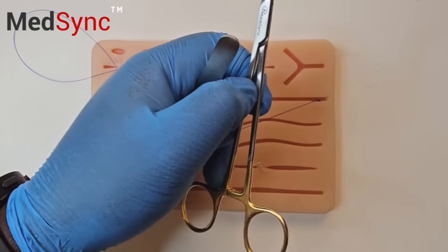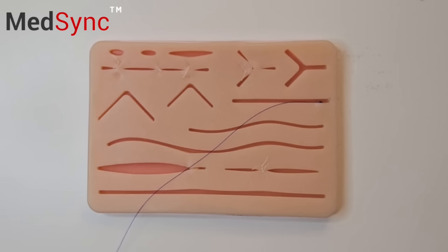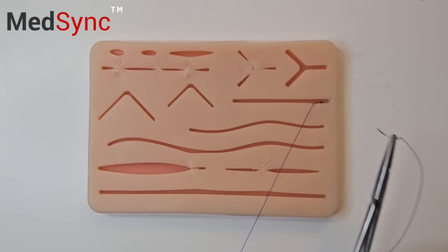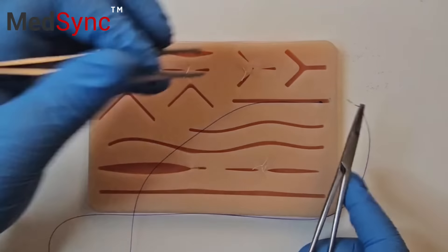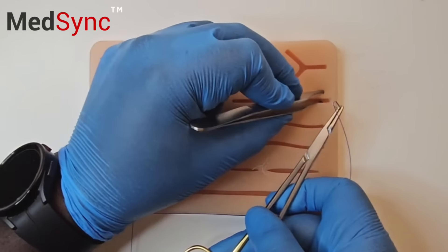You cut the suture flush with the skin, you don't want to see the knot. You now run the suture intradermally, also known as subcuticular, so the suture is invisible through the epidermis.